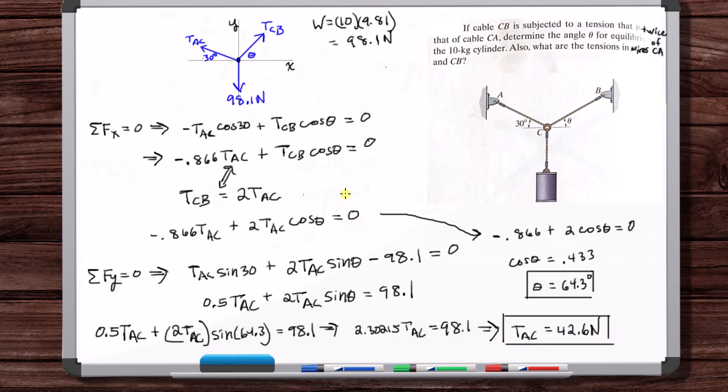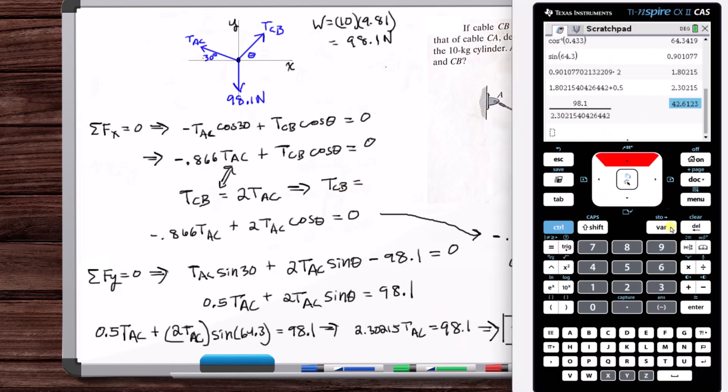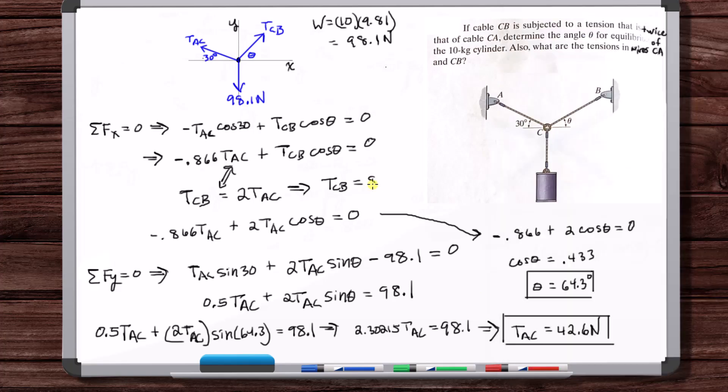Okay and then T_CB is just twice T_AC, so 85.2. Okay, and that's your answers.